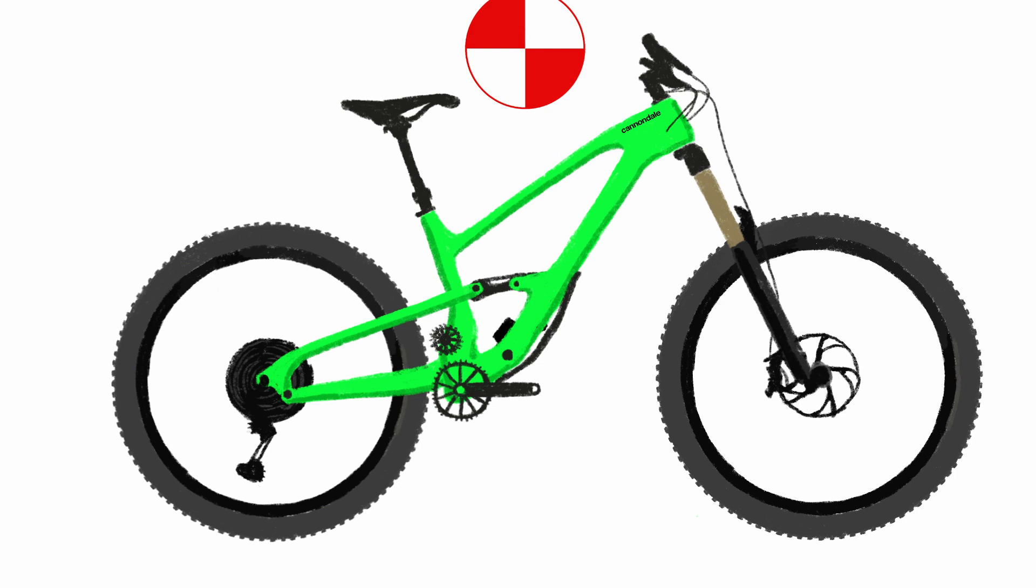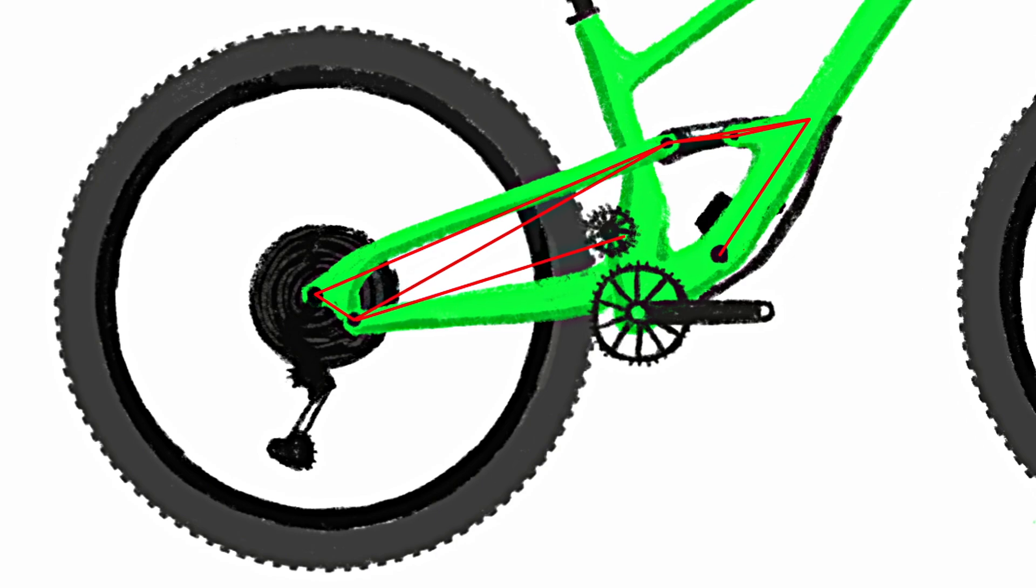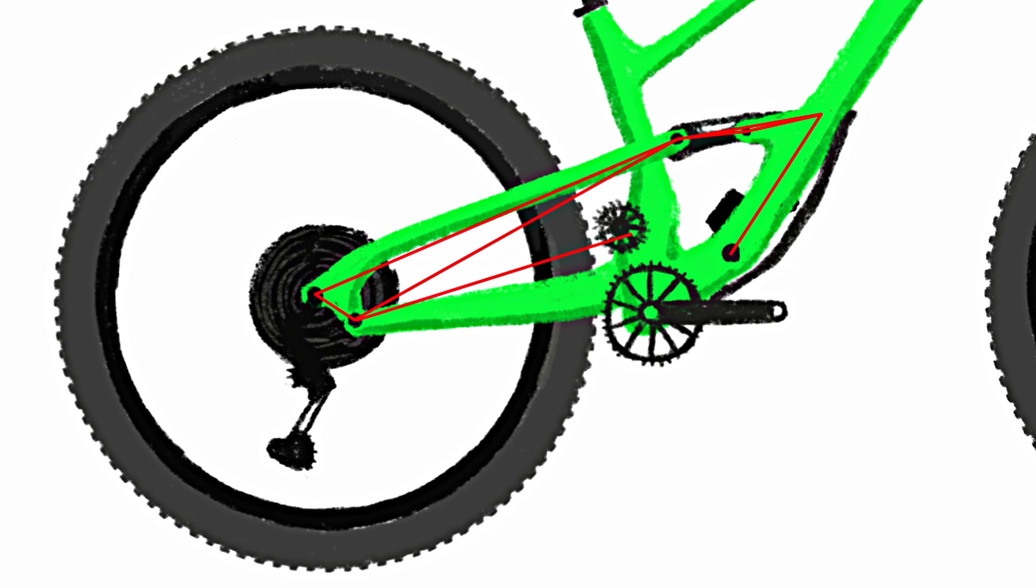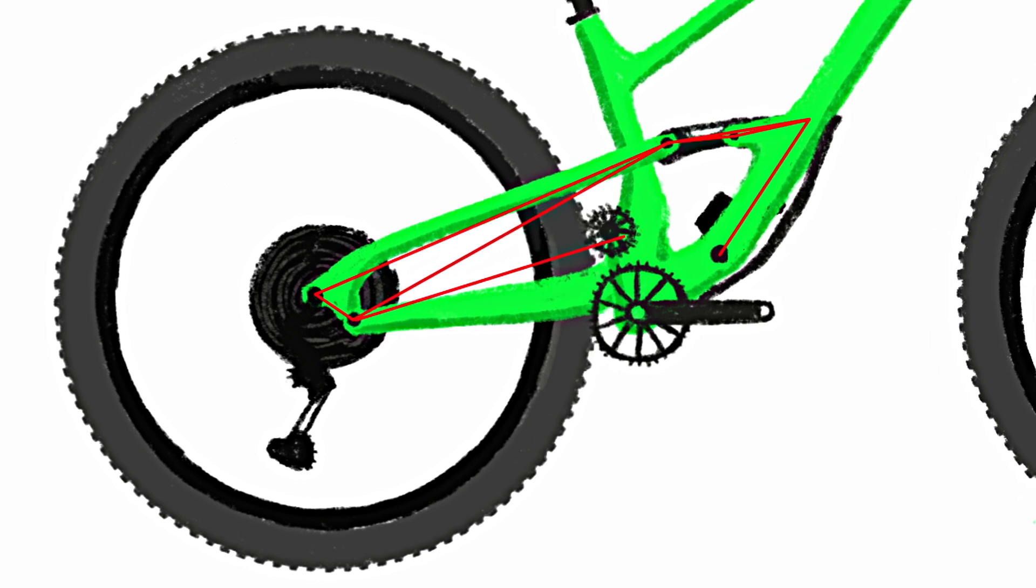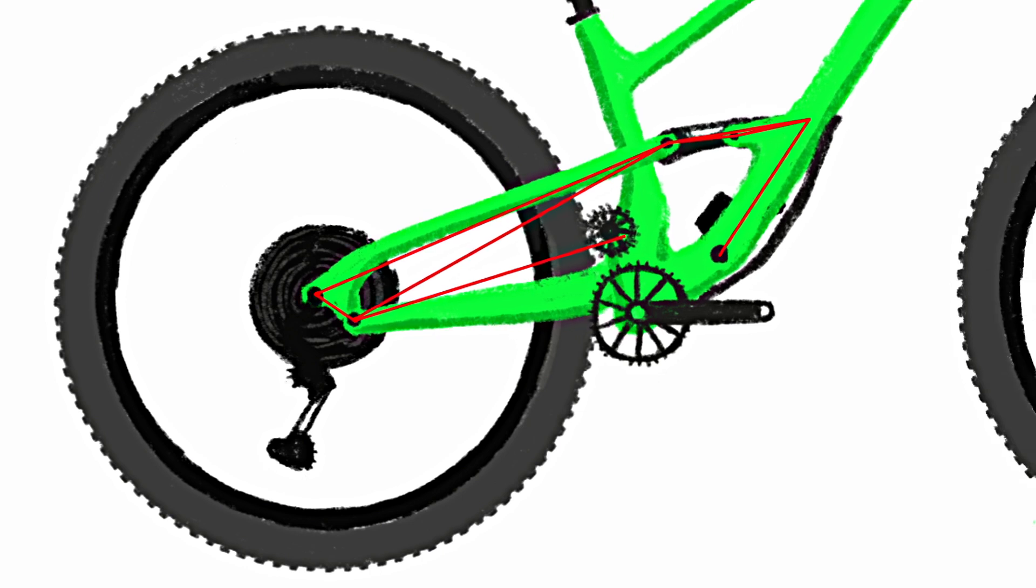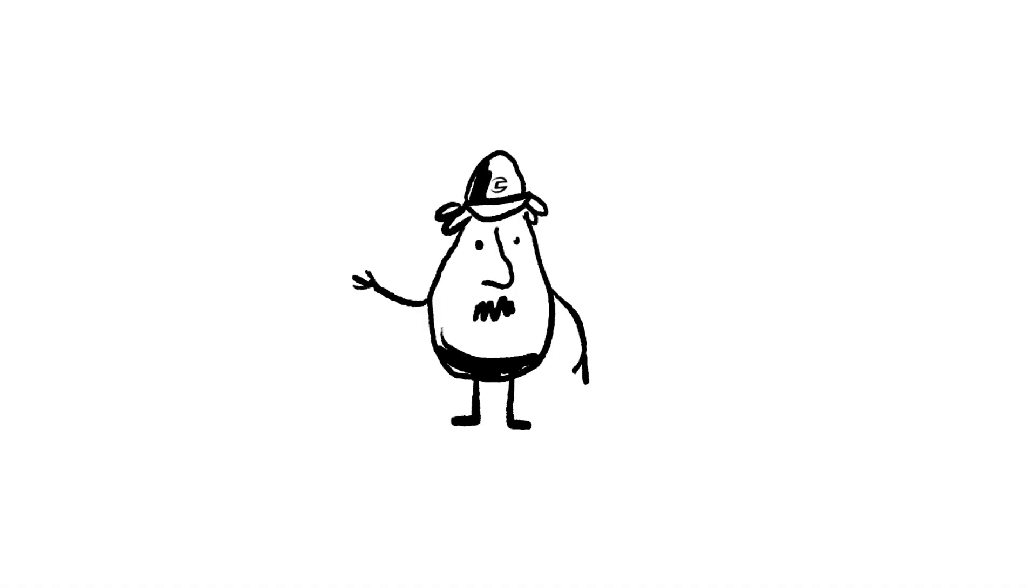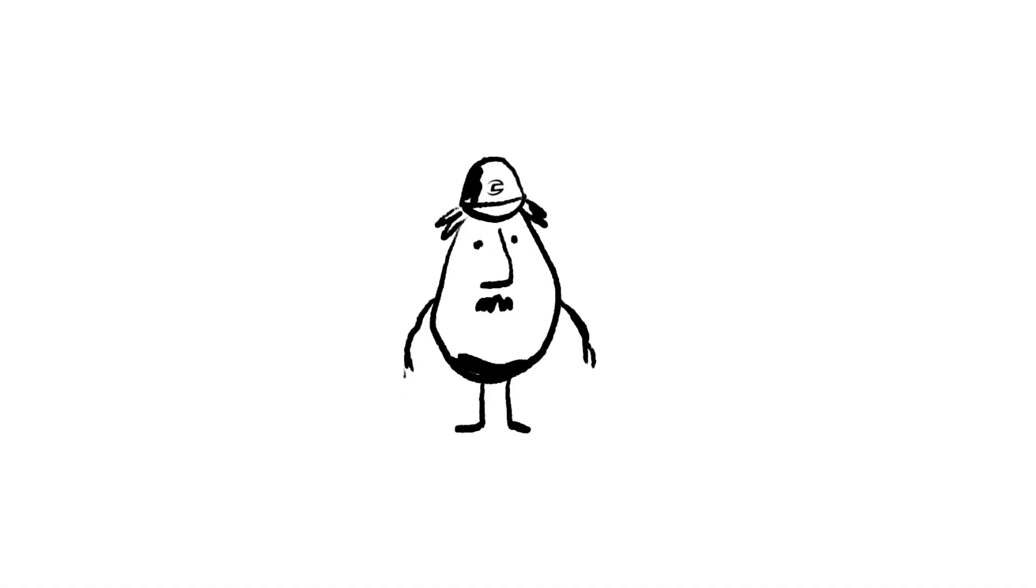With our proportional response size-specific design, we tailor every aspect of the bike around that size rider's average center of gravity. Everything. Geometry, chainstay length, rider position, and most importantly, the suspension kinematic. Each size gets its own customized suspension layout. Different pivot locations, leverage ratios, the works. The suspension is literally tailored for that size. So when you hop on a Jekyll and it feels like it was hand-built just for you, it was.